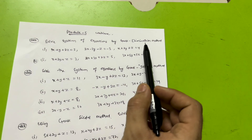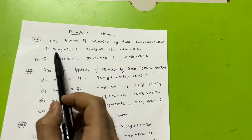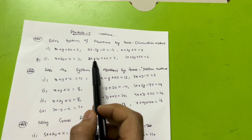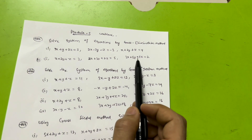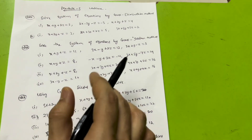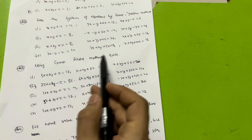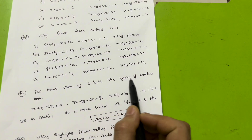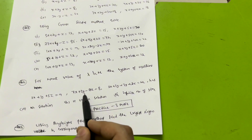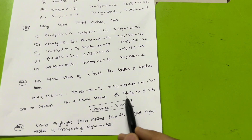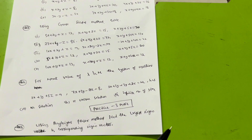Next, important questions on Gauss elimination method — two sets of equations: 3x + y + 2z = 3, 2x − 3y − z = −3, x + 2y + z = 4; and x + 2y + z = 3, 2x + 3y + 2z = 5, 3x + 5y + 5z = 2. For Gauss-Jordan method, practice four equations — take a screenshot. For Gauss-Seidel method, five questions are given — take a screenshot. Also: for what values of λ and μ does 2x + 3y + 5z = 9, 7x + 3y − 2z = 8, 2x + 3y + λz = μ have no solution, a unique solution, or infinite solutions? Practice three problems on this.